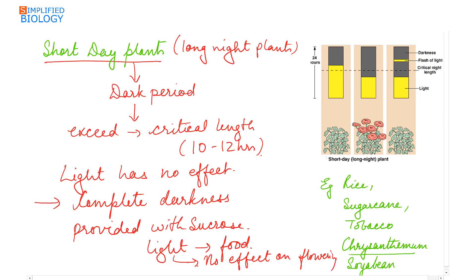This shows that light is only required for the formation of food or photosynthesis and has no effect on flowering. In short day plants, if the dark period is less than the critical length, no flowering is seen; if the dark period exceeds the critical length, flowering occurs.